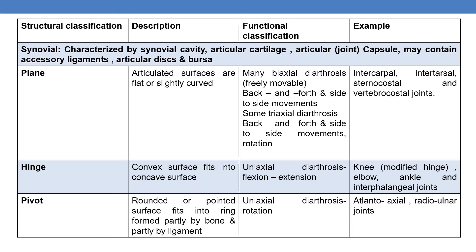The third type of joint based on structural classification is the synovial joint. Synovial joints, as the name indicates, are characterized by a synovial cavity, articular cartilage, and an articular capsule. They may also contain accessory ligaments, articular discs, and bursae.